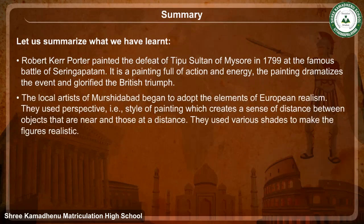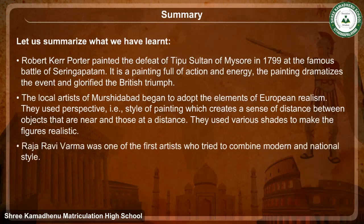The local artists of Murshidabad began to adopt the elements of European realism, using perspective — a style of painting which creates a sense of distance between near and far objects — and various shades to make figures realistic. Raja Ravi Verma was one of the first artists who tried to combine modern and national style.